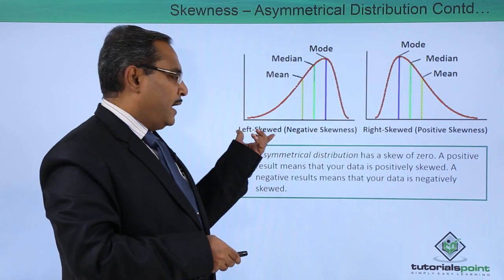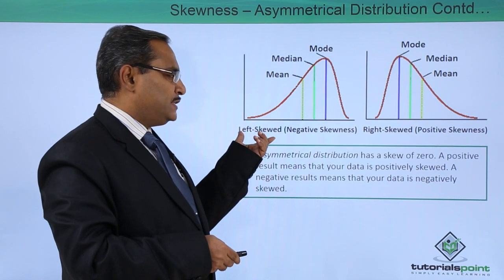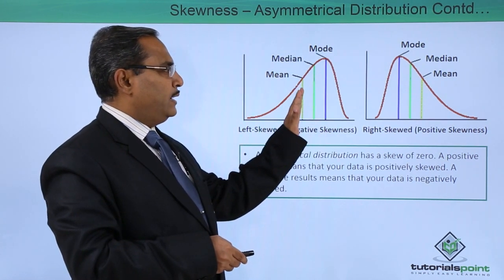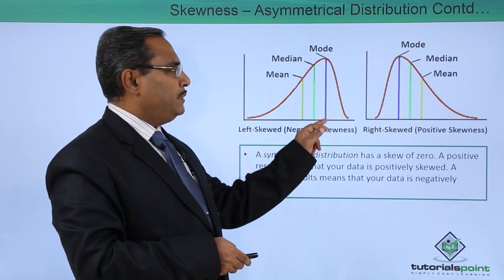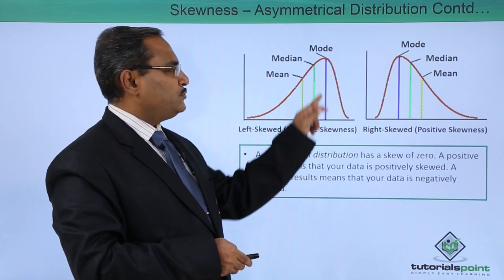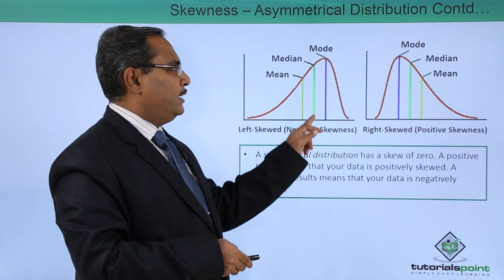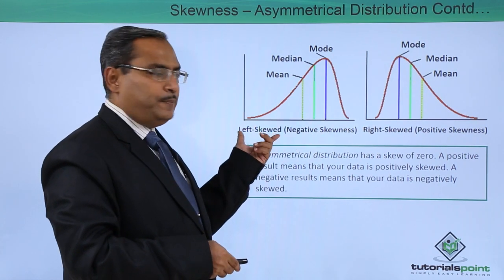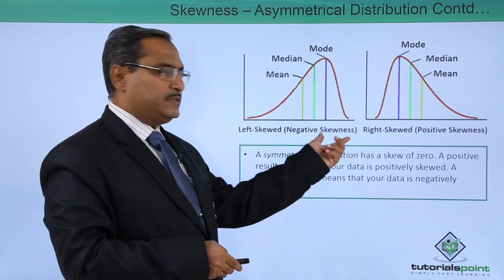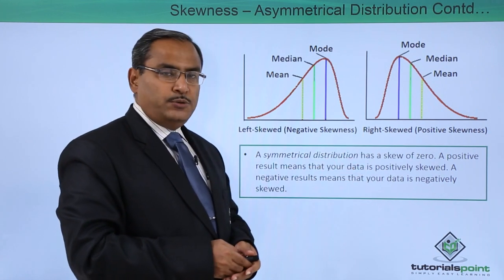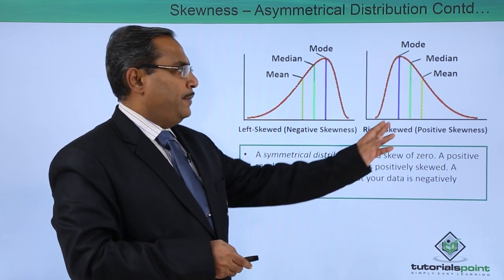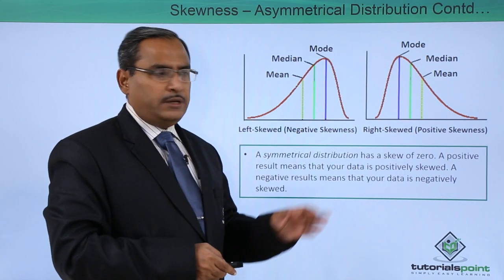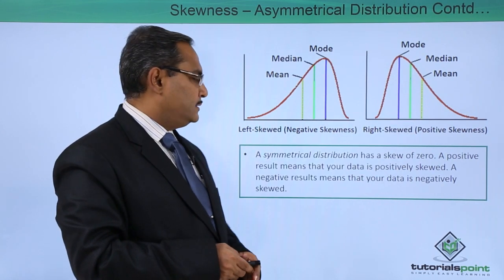Here we have this example of left skewed or negative skewness. You can find that we have the mean on the left side, the mode will have the maximum frequency, and then the median. In case of right skewed or positive skewness, we have the mode with the highest frequency, then the median, and then the mean coming on the right-hand side.